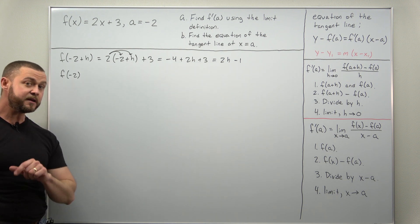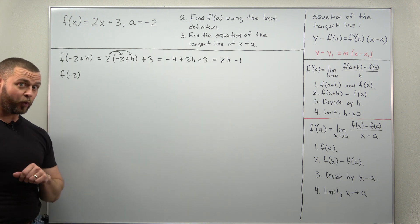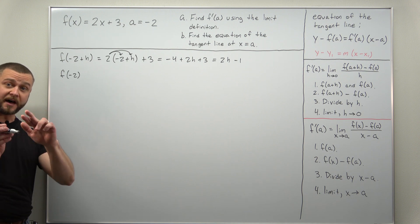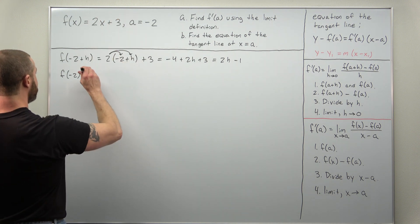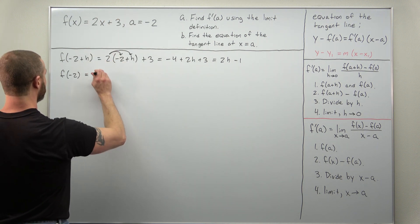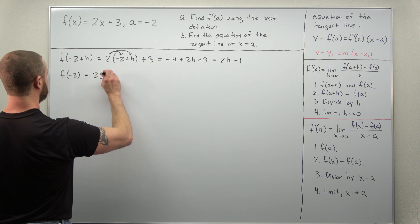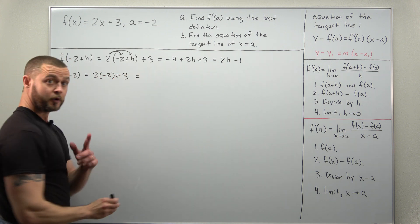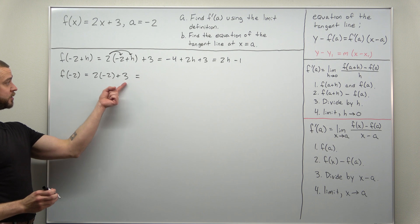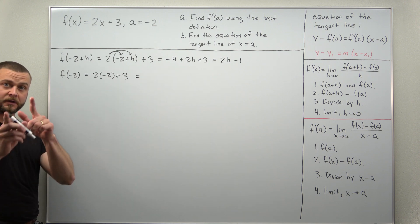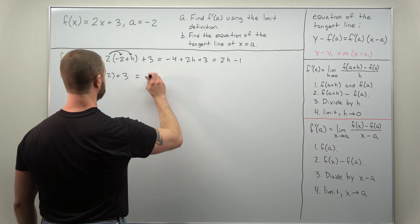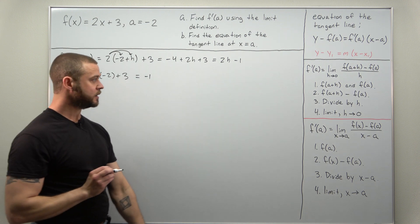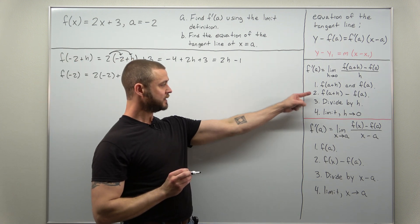The other thing we need for step 1 is f of A, which is f of negative 2. If you go ahead and plug that in, that should be very straightforward — we're going to get negative 4 plus 3, which is negative 1. Step 1 is done.